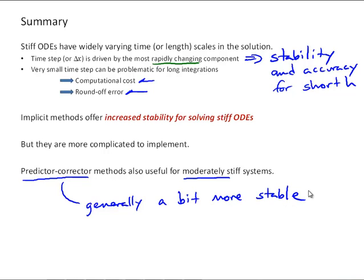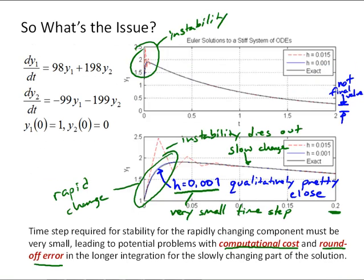Lastly, how do you recognize a stiff system of differential equations? Sometimes that can be tricky, but the main indicator that a system is stiff, that you'll become familiar with, is when we see these short oscillations happening around a quickly changing component in the system. That's an indicator of stiffness.